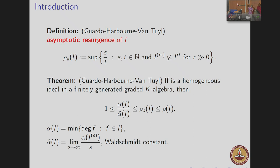The question is how do you compute, get an upper bound or lower bound for the asymptotic resurgence and resurgence, and find classes where you can actually compute them.